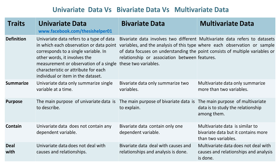Univariate data only summarizes a single variable at a time. Whereas bivariate data only summarizes two variables. Whereas multivariate data summarizes more than two variables.